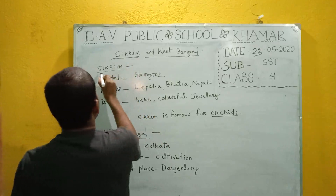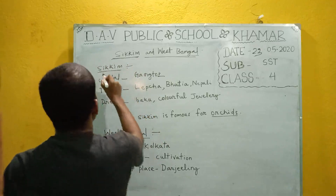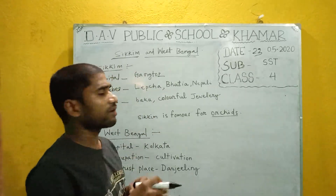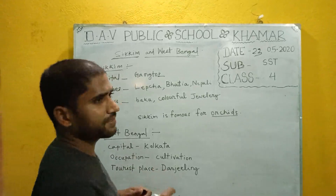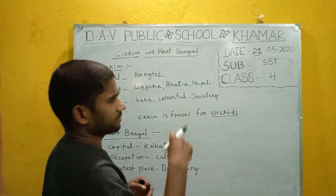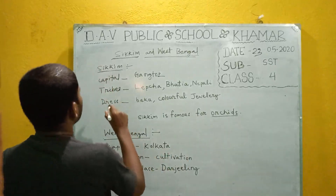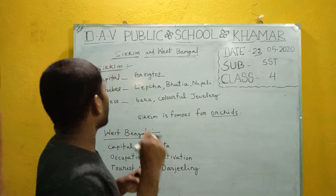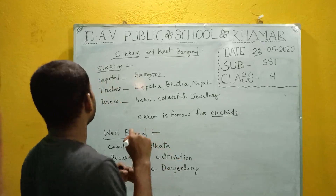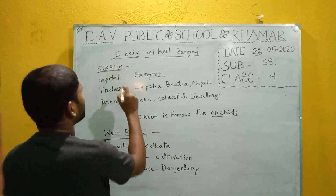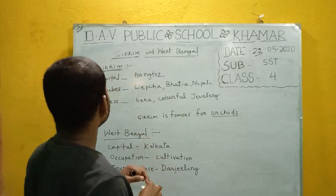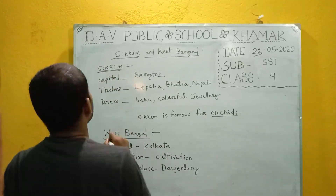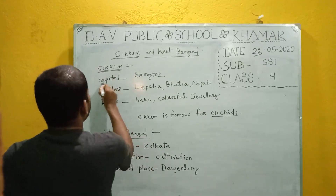Now let us discuss Sikkim. Sikkim is situated on high mountains and deep river valleys in the northeastern part of India. It is situated between Bhutan and Nepal, so we can call it a sandwich between Nepal and Bhutan. Its capital city is Gangtok.